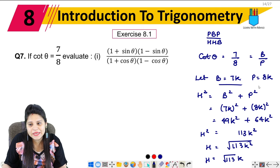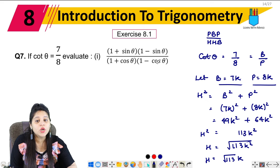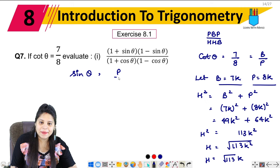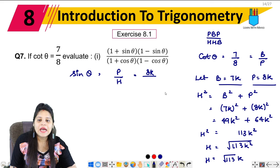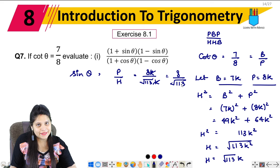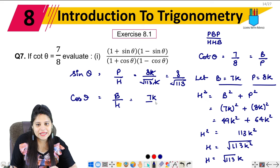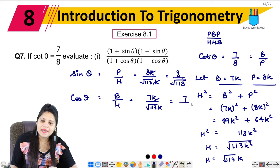Now we will find sin theta and cos theta. Sin theta = perpendicular upon hypotenuse = 8k upon √113k. The k cancels, giving sin theta = 8 upon √113. Similarly, cos theta = base upon hypotenuse = 7k upon √113k. Again k cancels, giving cos theta = 7 upon √113.